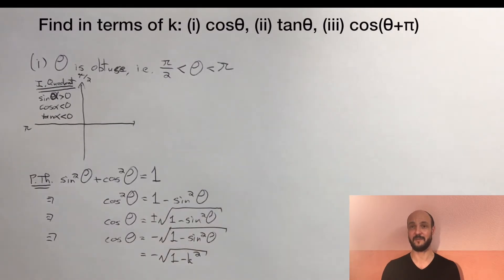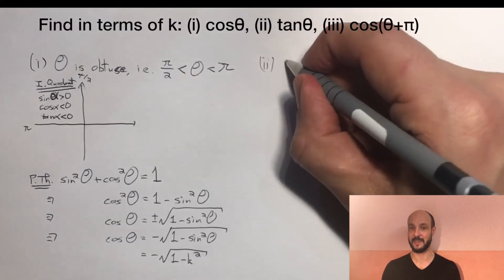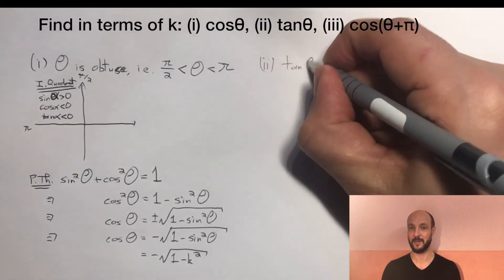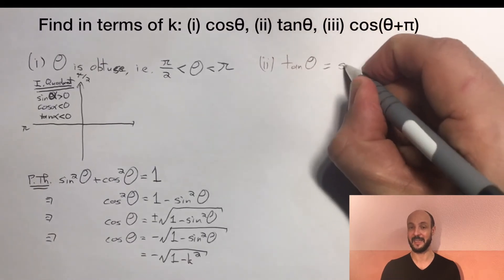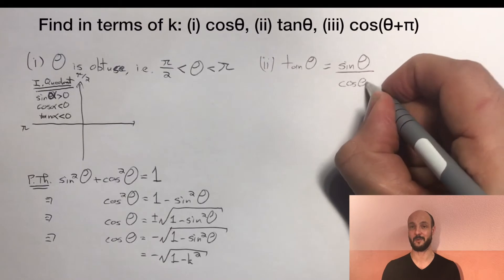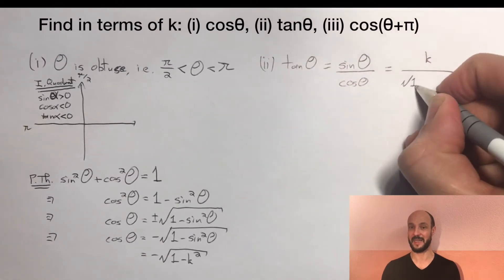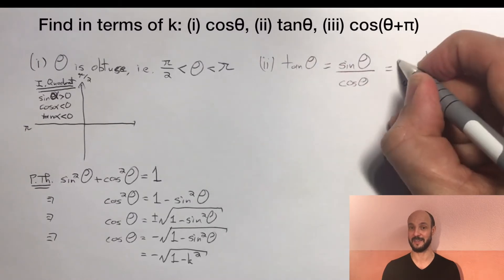Now tan theta follows on straightforwardly. We know that tan theta is sine theta over cosine theta, so we can simply put our sine theta k over our minus the square root of 1 minus k squared. And as we expect, this is negative. So we've got minus k over the square root of 1 minus k squared as our answer.